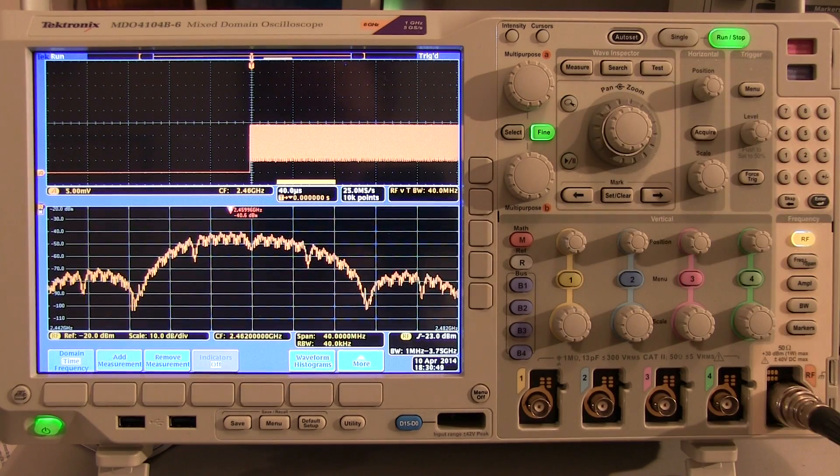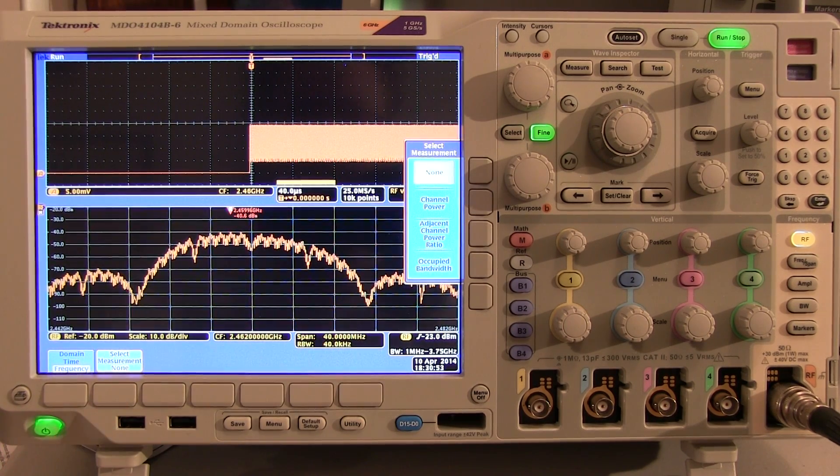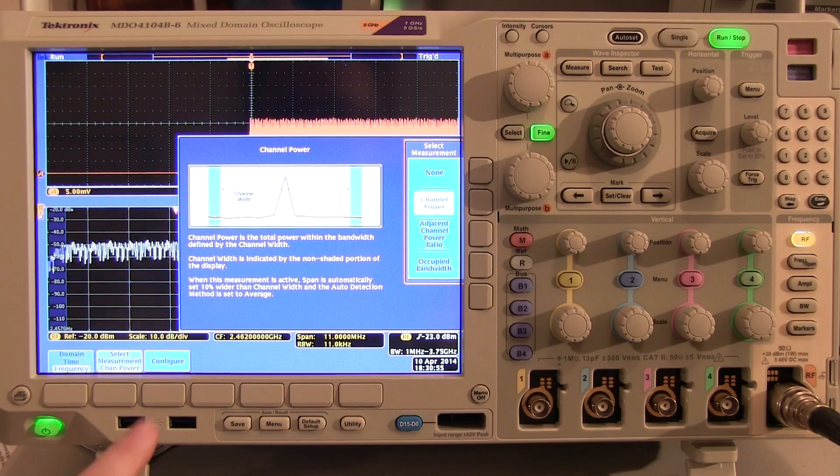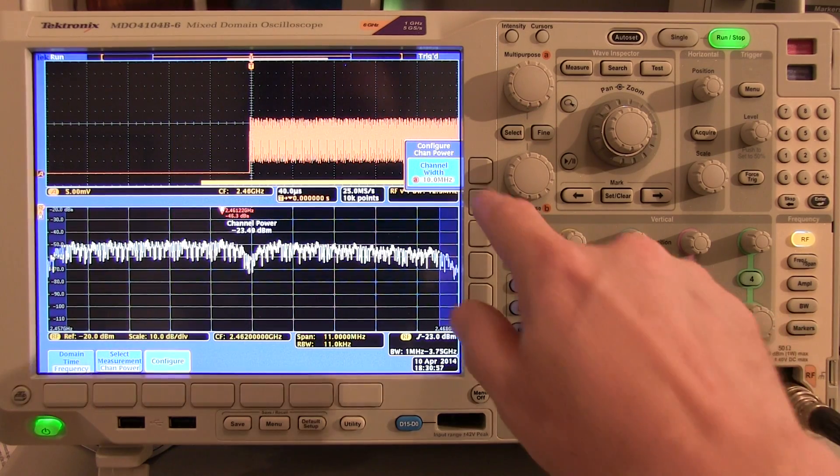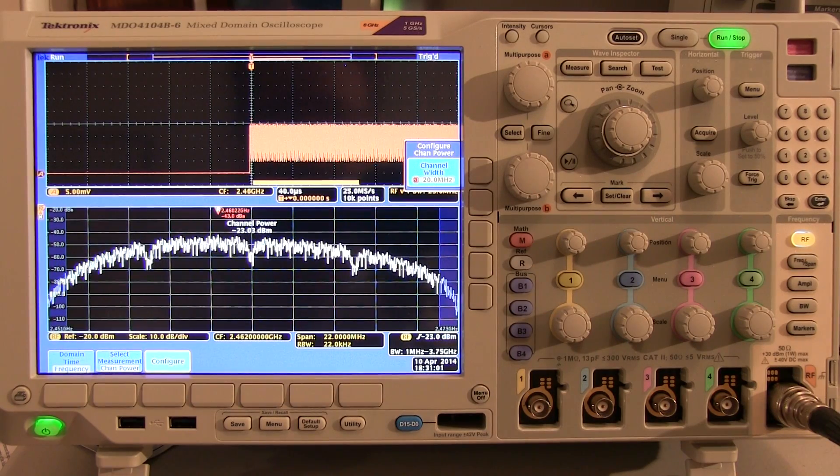So I'll hit the measure button here. Say I want to make a frequency domain measurement. And I will select channel power. And I'll configure that measurement until I want it to be a 20 megahertz channel power measurement.